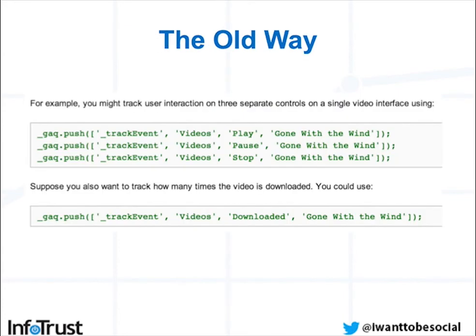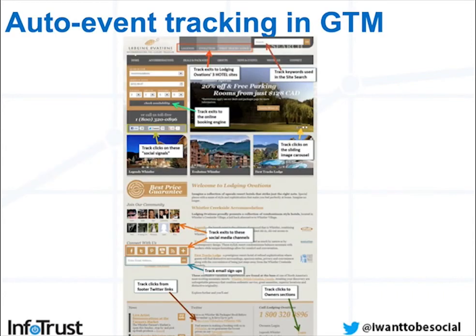The old way of tracking events is by implementing some custom JavaScript code from Google Analytics onto the source code of your site, wrapping around the elements you want to track. For example, tracking a video play or the downloads of that video. This old way would require a lot of custom code changes to the source code of your site.